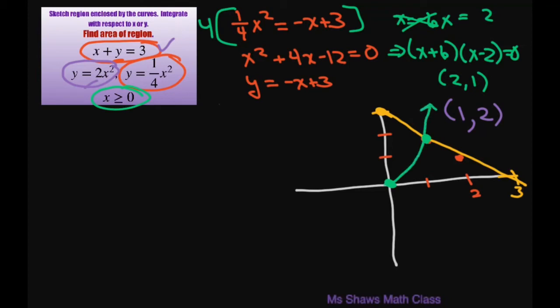The next one is y equals 1/4 x squared. For that one, at x equals 2, it's going to go to 1, so it goes to there — and again it starts at 0. So did I get everything? We're in quadrant 1 basically. This is the shaded region we want right in here.